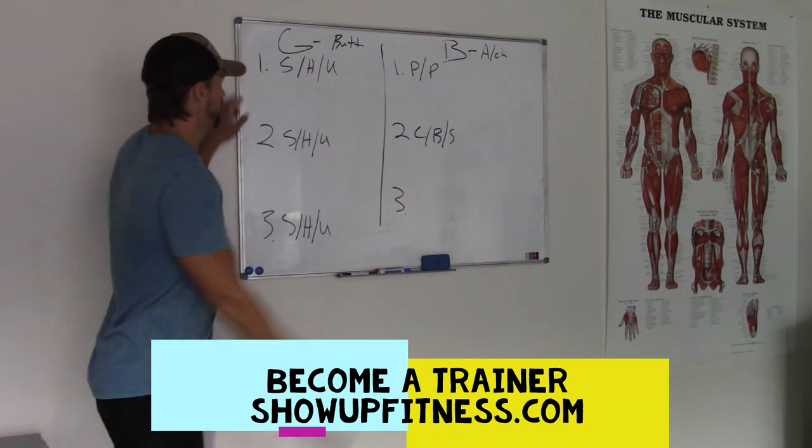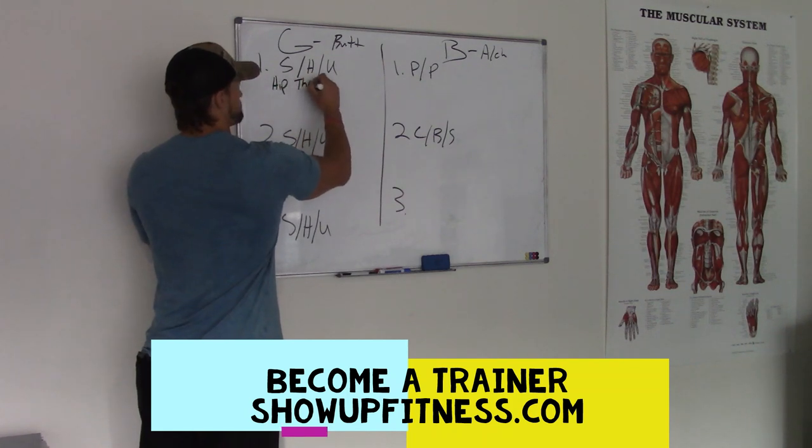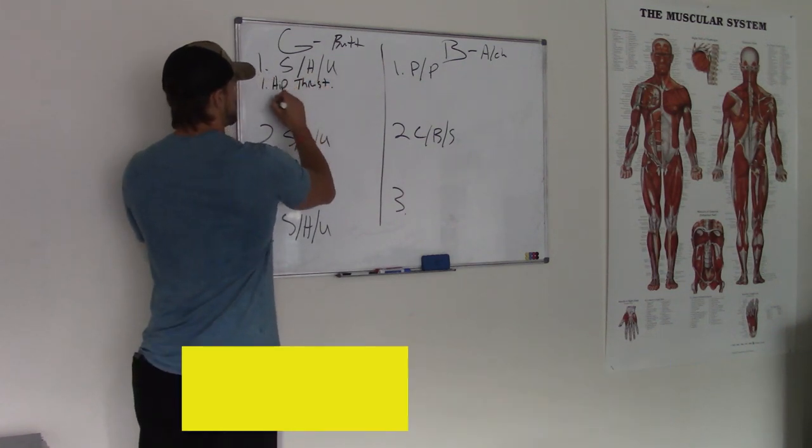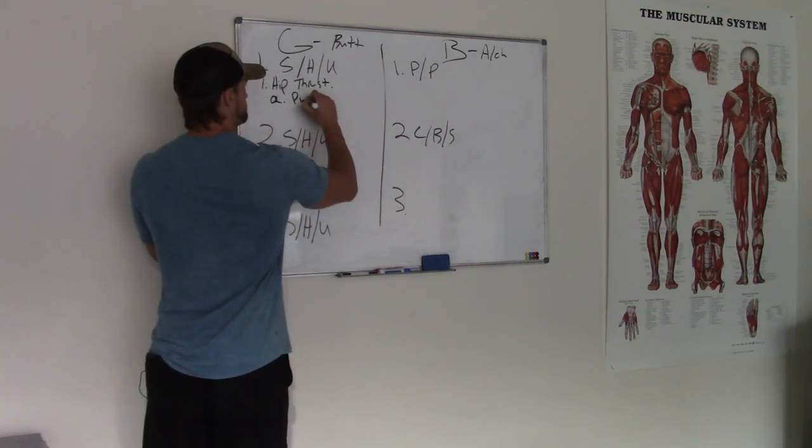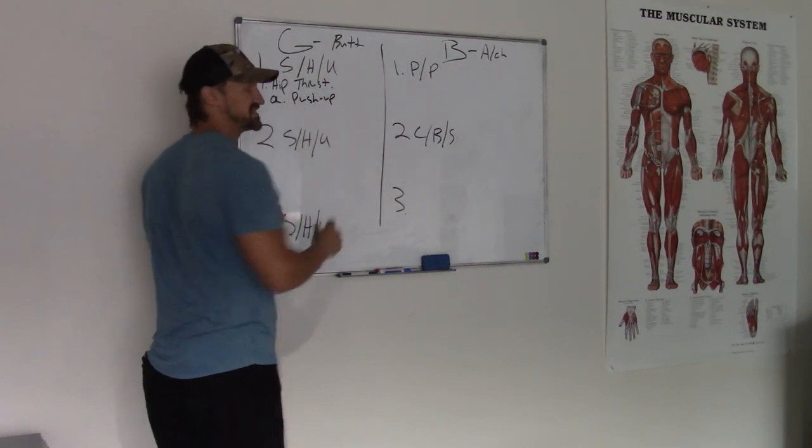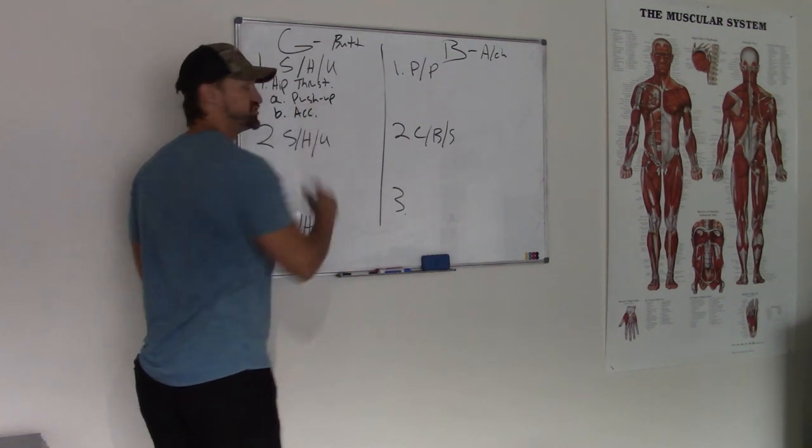So for a girl, choose. We're going to hip thrust first. A, the second exercise, push up. That's going to be the second pattern. B, accessory. Do whatever the hell you want to.